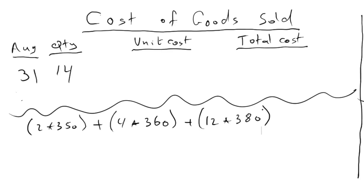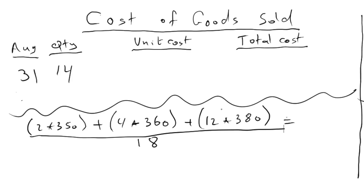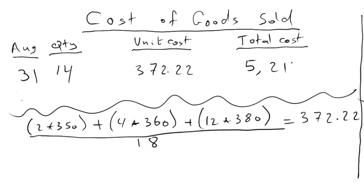No other purchases, so divide that total by the total number of units: 12 plus 4 plus 2 equals 18 units. The average cost per unit comes out to $372.22. So under unit cost I'll use $372.22, and the total cost — multiplying them together — gives you $5,211. That's all you have to do: one-time calculation when it comes to periodic. You don't have to go step-by-step like we did with perpetual.